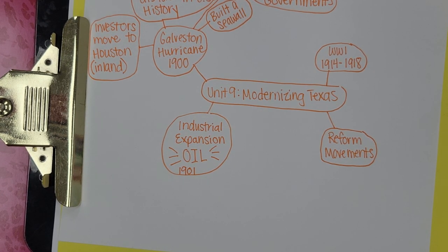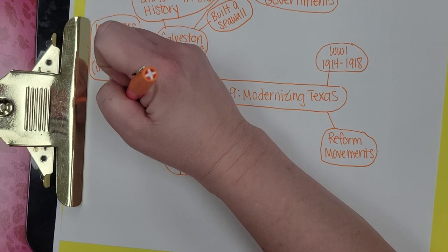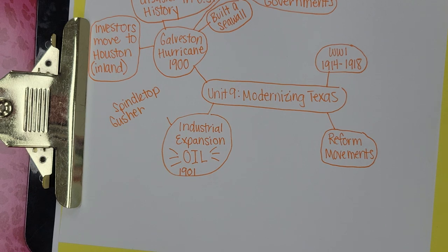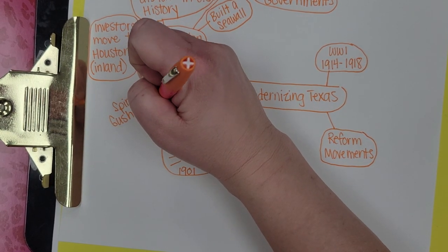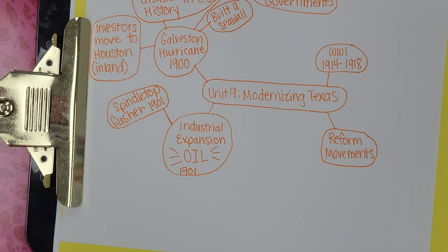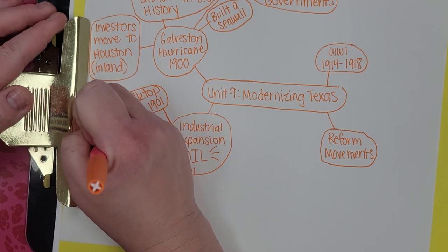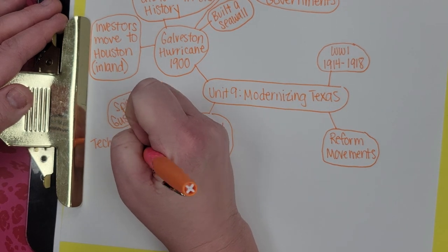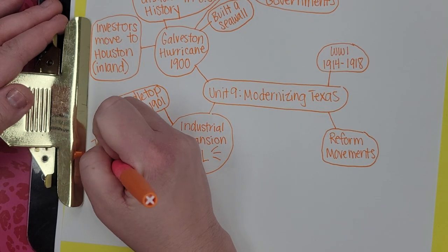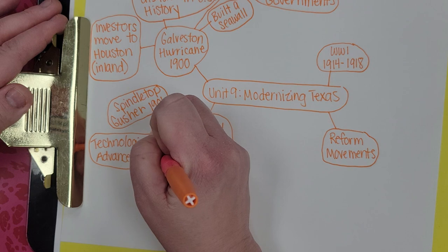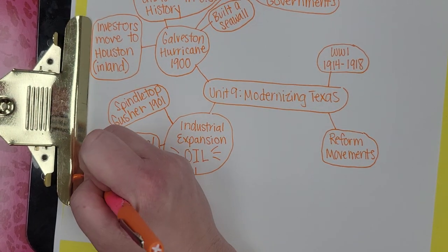The next thing that happens is industrial expansion. We had the Spindletop gusher. We call it a gusher because they didn't have enough technology to properly gather the oil, so it kind of just went everywhere — wasting probably millions of dollars in today's money. That happened in 1901. We then see a lot of technological advancements, and oil and industry grew as needed, especially because of Howard Hughes.